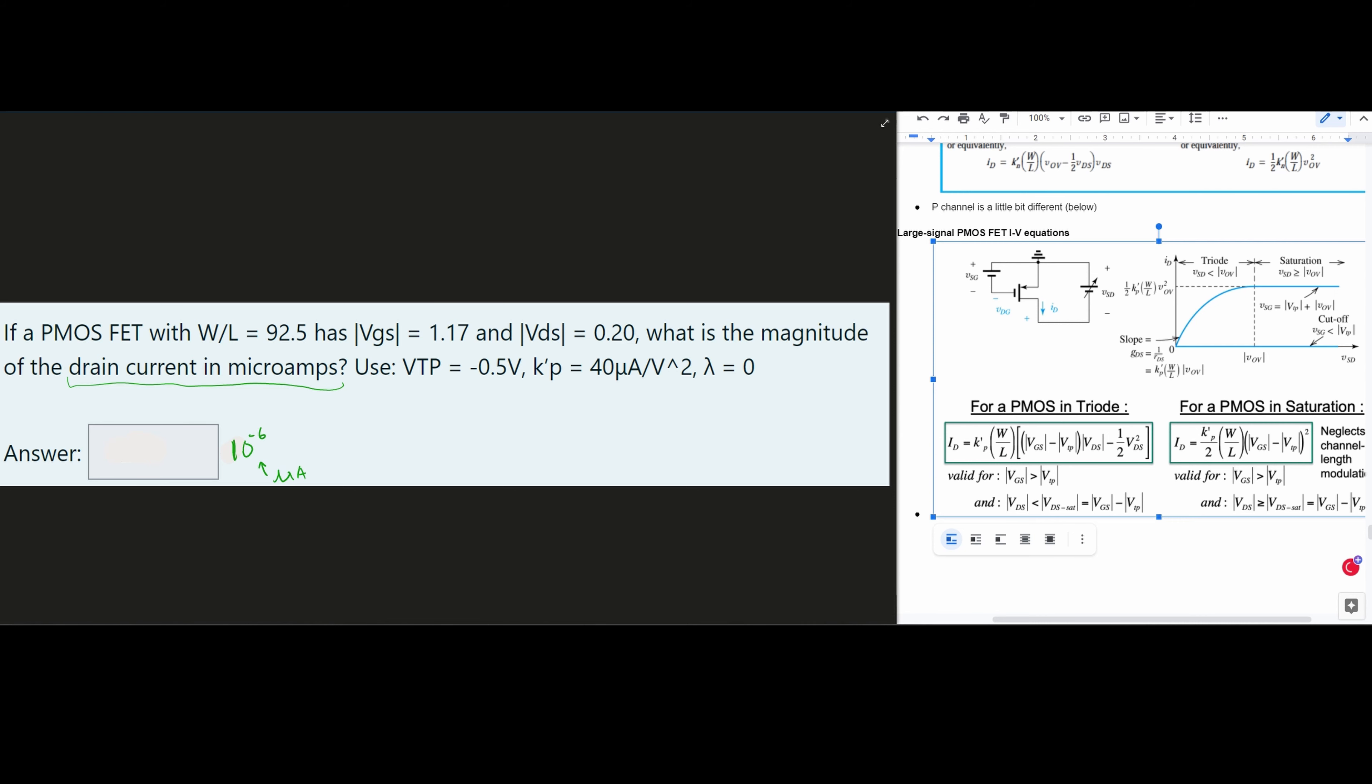Both of them are the absolute values. So if we were to look at this, and we will do it in black, our VGS right here is 1.17. That's the first value we're given. So we have 1.17 minus our VDS, or not our VDS, sorry, minus our VTP. And our VTP is right here. So we're going to have minus an absolute value of negative 0.5. And then we're going to compare this to 0.20 because this is our VDS.